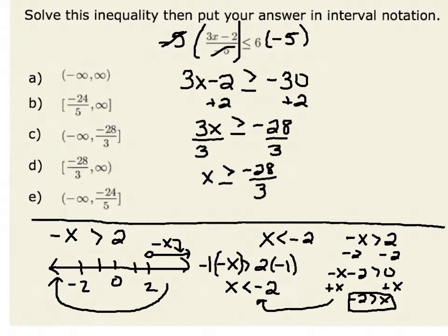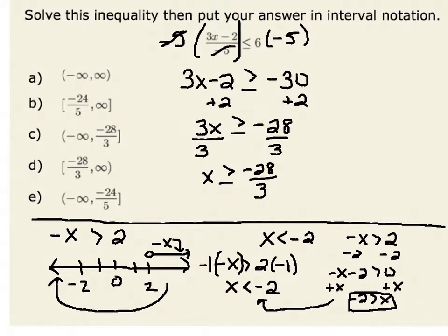Negative 28 thirds is equivalent to negative 9 and 1 third. So if I pick any number greater than or equal to negative 28 thirds, I could verify whether or not my solution makes sense.